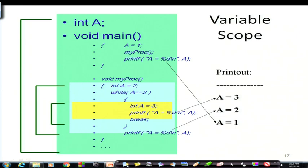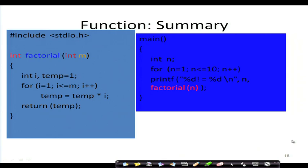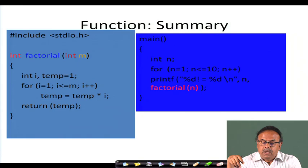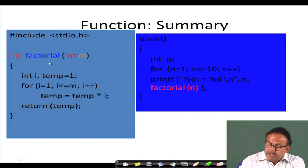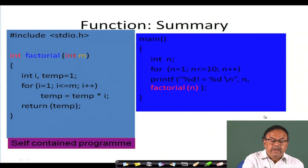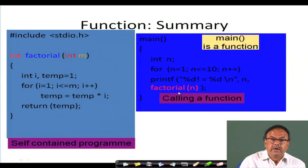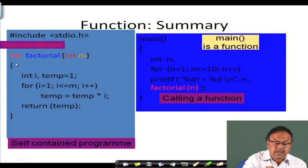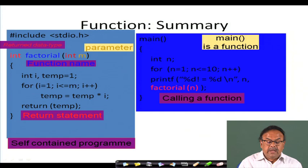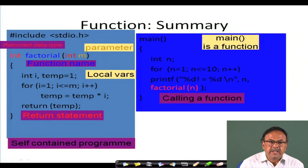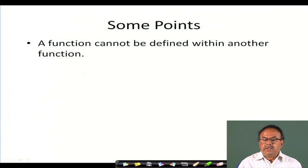Summarizing functions: main calls a function factorial, and the function is a self-contained program with a definite named function definition where the type of the argument is also specified. Main is also a function. The function has a return data type, a function name, parameters, and a return statement. Variables like temp are local variables. A function cannot be defined within another function — I repeat this important point.